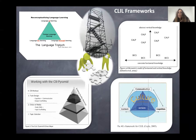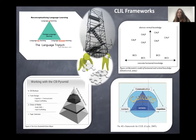Then we have the difference between BICS and CALP, according to the famous linguist Cummins. With CLIL, we use BICS — basic interpersonal communication skills — so the general communication skills used for daily life interactions, and CALP, which is the cognitive academic language proficiency that we need to communicate and talk about academic subject-specific content.